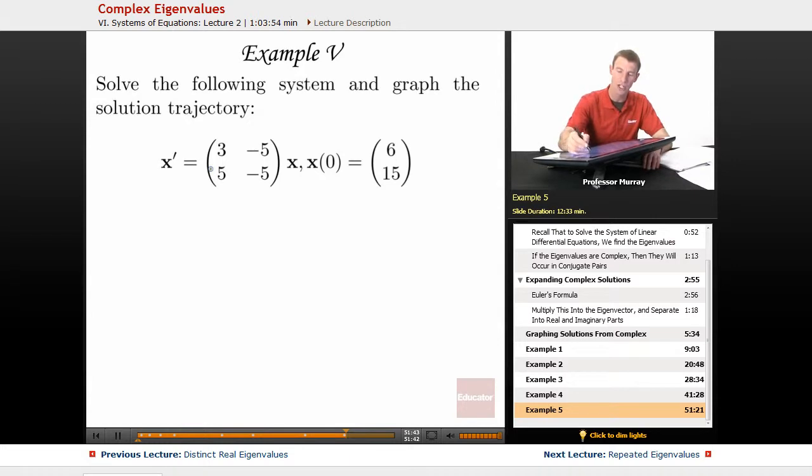But now we've also got this initial condition: x of 0 equals [6, 15]. So we're going to use that initial condition to find the values of the constants in the general solution from before.